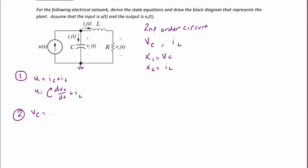So vc is equal to L dil/dt plus il times R.